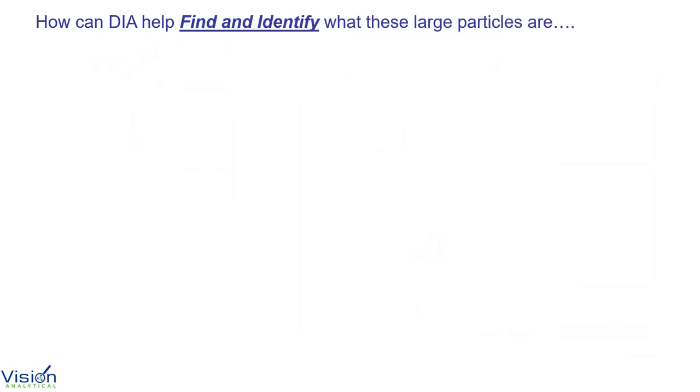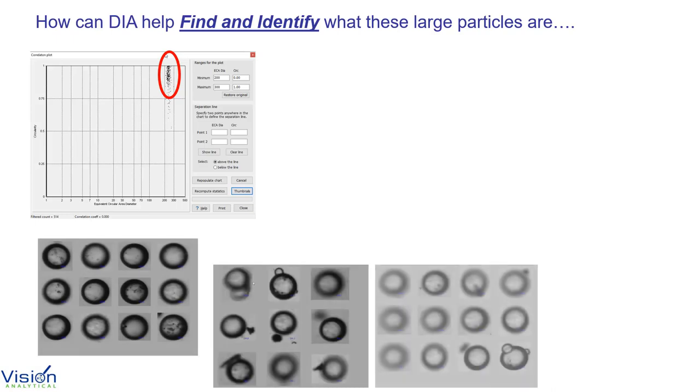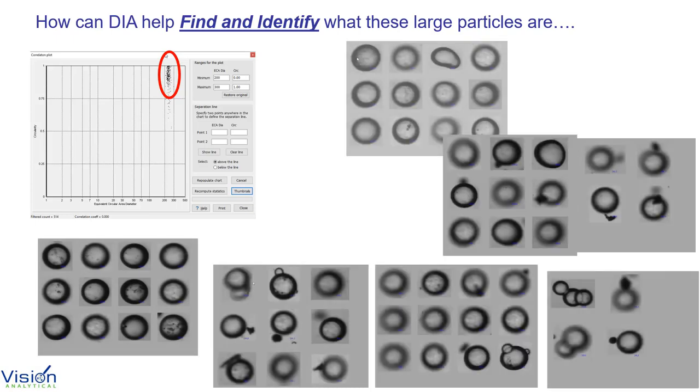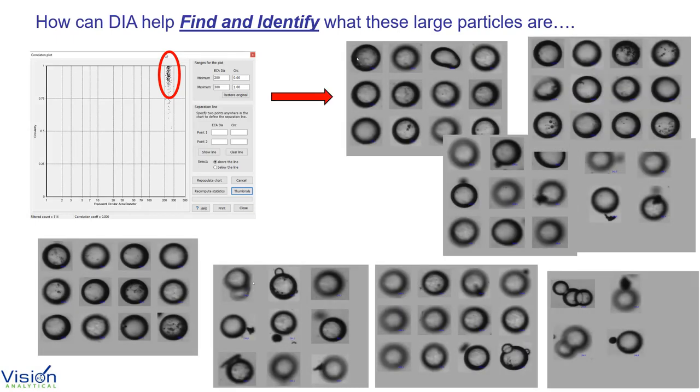Correlation plots enables the user not only to identify the presence of these particles, but also to show what they are. This is an absolute requirement, once again, to know if you're going to take action or not, and what type of action to take. This is an excellent feature of dynamic image analysis.